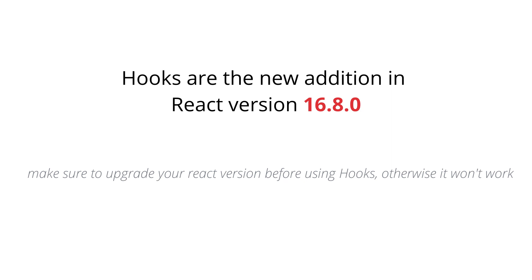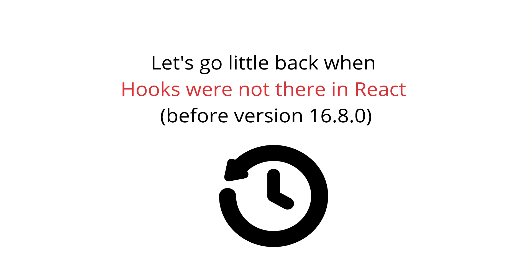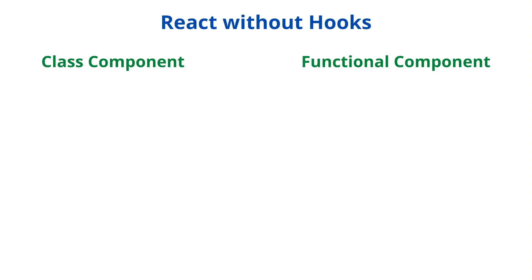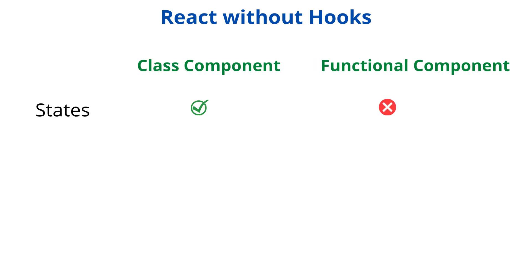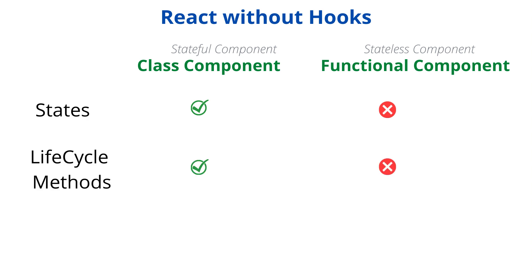Let's understand what hooks are in React. Before React version 16.8.0, when hooks were not in React, there were many things a class component could do that a functional component could not. For example, state could only be used in class components. That's why functional components were called stateless components and class-based components were called stateful components. Similarly, to use lifecycle methods like componentDidMount and componentUnmount, you needed to use classes only. Functional components didn't have the concept of lifecycle hooks either.